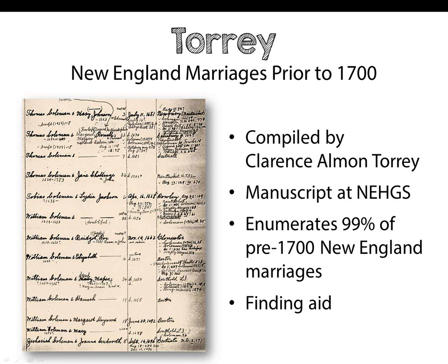Torrey's New England Marriages Prior to 1700 is an exhaustive work compiled by the late genealogist Clarence Allman Torrey and is one of the most utilized manuscripts at NEHGS. Through his careful research, he enumerated nearly 99% of the married couples of pre-1700 New England. In many cases, this includes the place and date of marriage or the earliest known date associated with their marriage, calculated from a year of birth of a child, a passenger list, or a secondary marriage to another spouse.